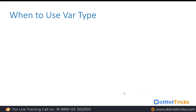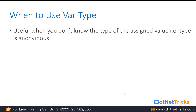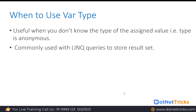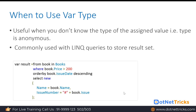When to use var type: It is used when you don't know the type of the assigned value, or you can say the type is anonymous. It is commonly used with LINQ queries because when we fetch data from more than one table, or select only a few columns or fields from an entity, we create an anonymous type. To store that anonymous type result set, we prefer var. The var type can also be used to create a single object or anonymous object.